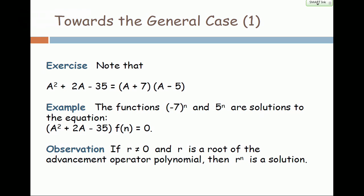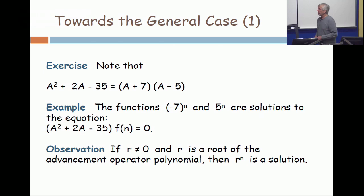Is there anybody in the room who cannot see the validity of the algebraic expression at the top? A squared plus 2A minus 35 is A plus 7 times A minus 5. Everybody got that?